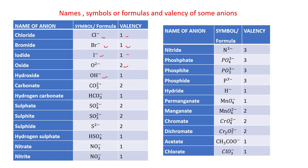Hydroxide: OH-, valency is 1. Carbonate: CO3 2-, valency is 2. Remember, in CO3, there is 1 carbon and 3 oxygen atoms, and these 4 atoms bear 2 negative charges — 3 is the subscript of O and 2- is the charge on CO3. Hydrogen carbonate: HCO3-, valency is 1.